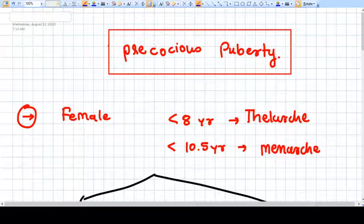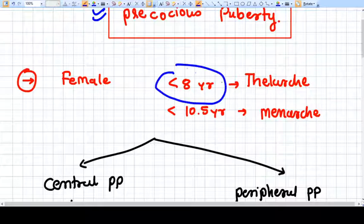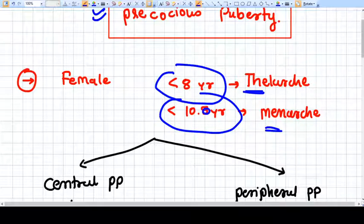In this video we will briefly discuss precocious puberty. Precocious puberty, already discussed in previous video, in females is defined as less than eight years onset of thelarche and less than 10.5 years or 10 years onset of menarche.